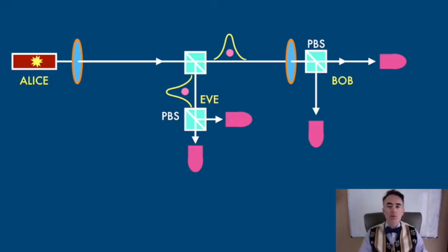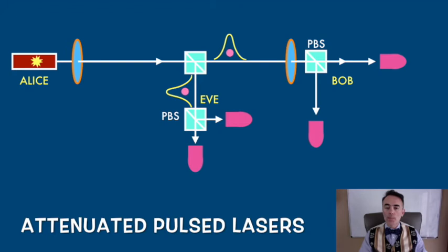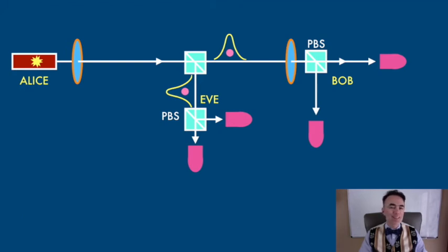This introduces more danger to the communication. The way most QKD setups are designed use attenuated lasers, pulsed lasers whose intensity is attenuated to the single photon level, meaning that on average there is less than one photon per pulse.